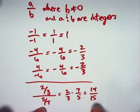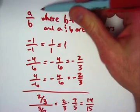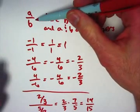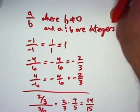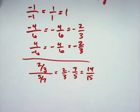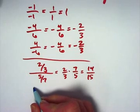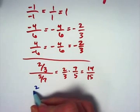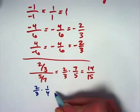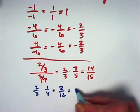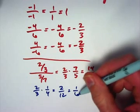A rational number is any number that can be put in the form a over b — it might not be in that form initially, but it can be. The rational numbers are closed under addition and multiplication. Let's do multiplication first: two-thirds times one-fourth is two-twelfths, equivalently one-sixth. That's another rational number, with integers in both the numerator and denominator.